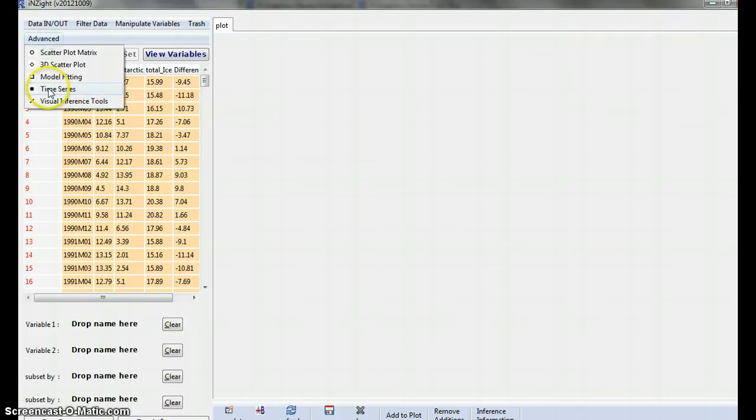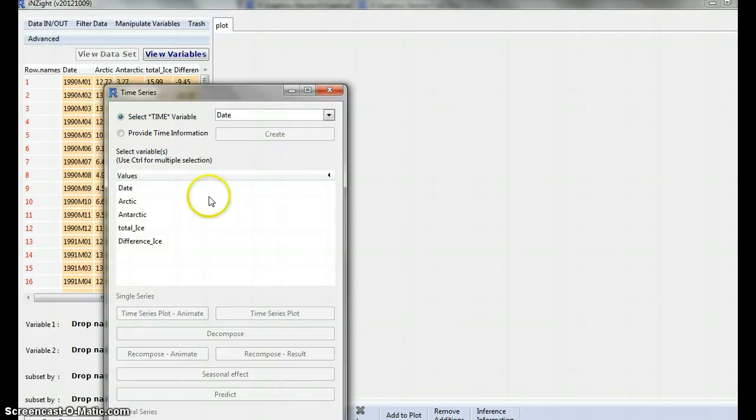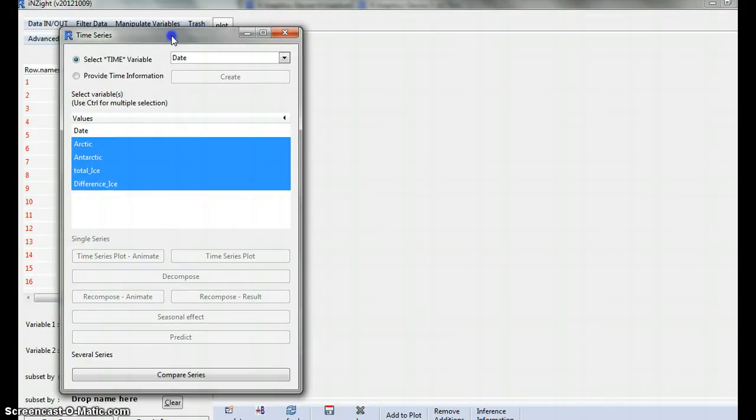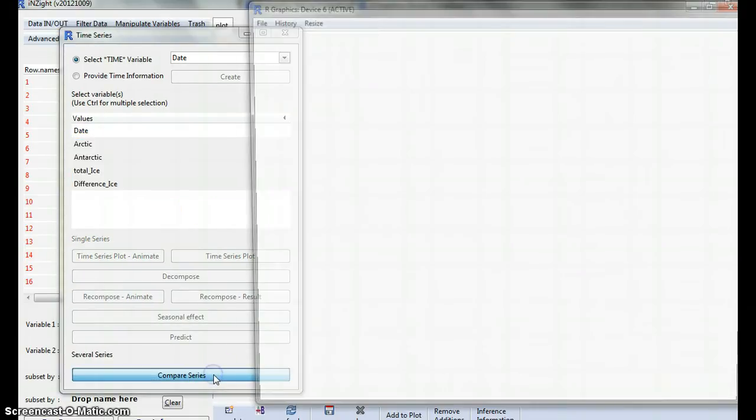So now I'm going to go advanced, time series, and now I've got these four. Use control for multiple selections. So I'm going to go there, I'm going to push control, click, click, click, so cool. Compare series.